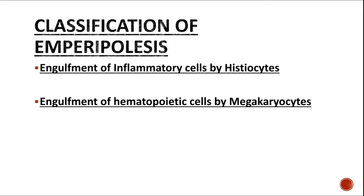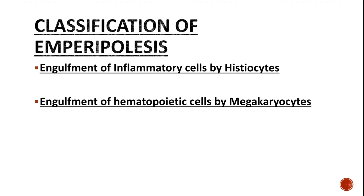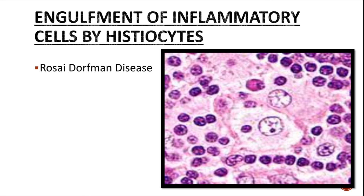Based on the engulfment of different varieties of cells, emperipolysis can be divided into two categories. Either you can have engulfment of inflammatory cells by histiocytes, or you can have engulfment of hematopoietic cells — such as red blood cells or neutrophils — by megakaryocytes. Different diseases are associated with each category, and we will look at each one by one.